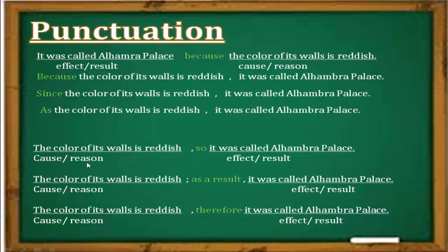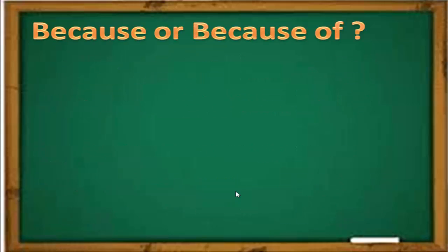As for expressing the effect, there are punctuation rules. When using 'so' and 'therefore,' put a comma before them: 'It was reddish, so it was called Alhambra Palace' and 'it was reddish, therefore it was called Alhambra Palace.' When using 'as a result,' you have two options: put a semicolon before it and a comma after it, or use a full stop and start a new sentence with capital 'A': 'As a result, it was called Alhambra Palace.'